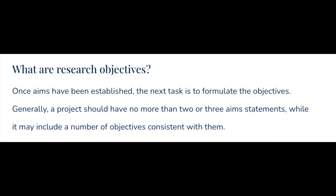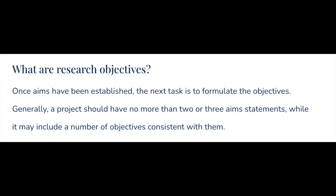Once your aims have been established the next task is to formulate the objectives. Generally a project should have no more than two or three aims whilst it might have a number of objectives consistent with them. Objectives are subsidiary to aims — they are the steps you are going to take to answer the research question, or a specific list of tasks needed to accomplish the goals of the project. They must be highly focused, feasible, and make accurate use of concepts.